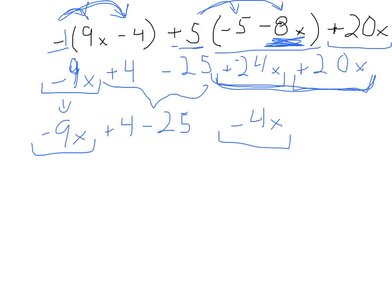Now I'm going to simplify this. Negative 9x plus negative 4x is going to give me negative 13x, and then a positive 4 plus a negative 25 is going to give me negative 21. And that's the final solution for this problem.